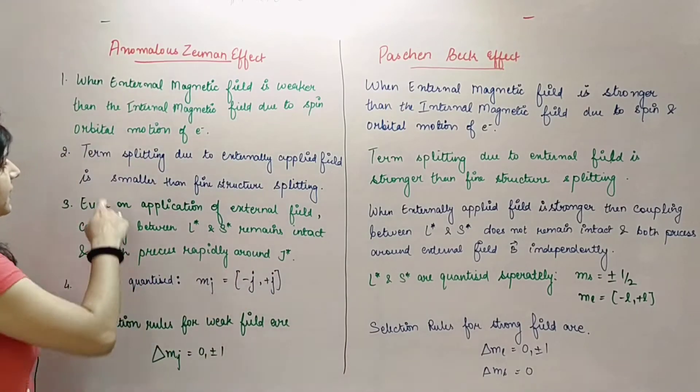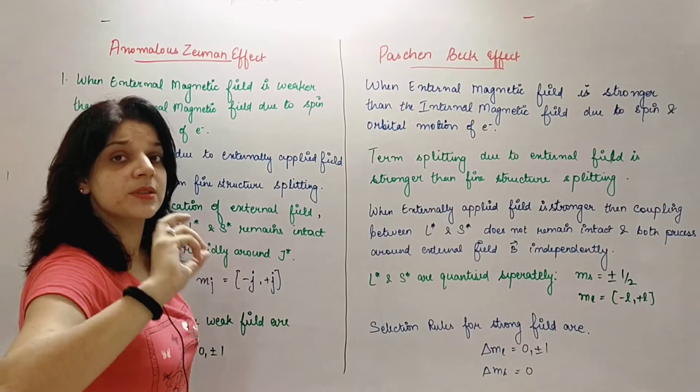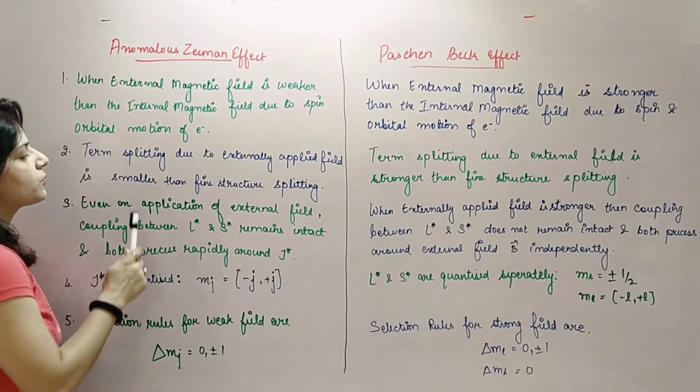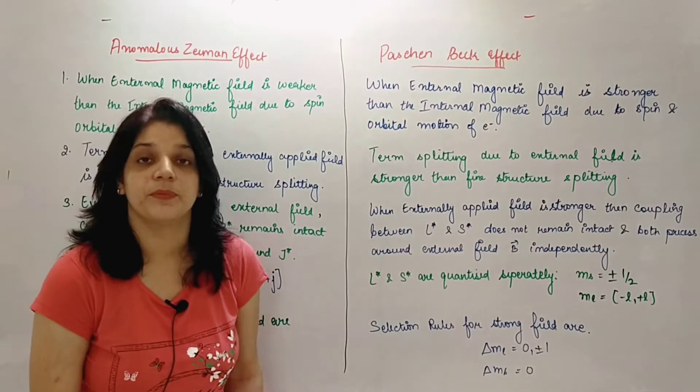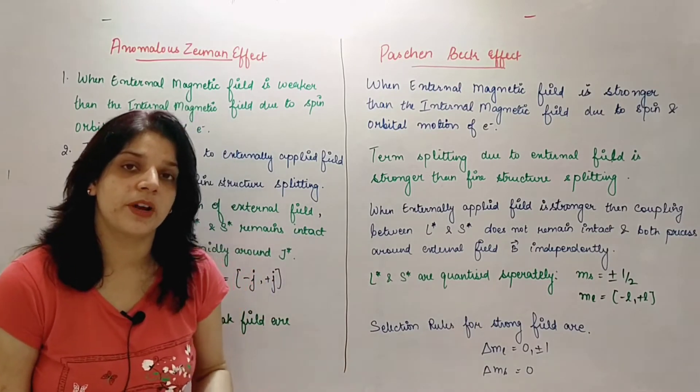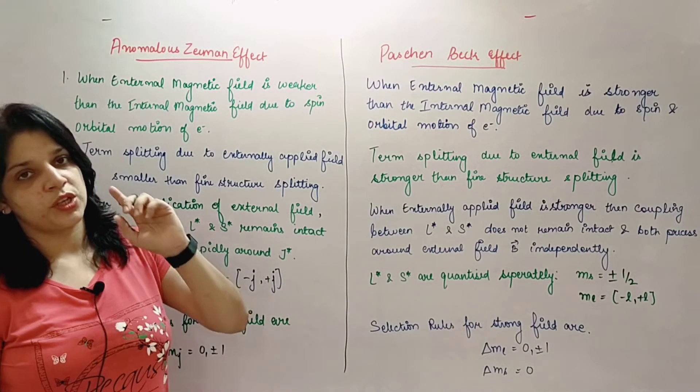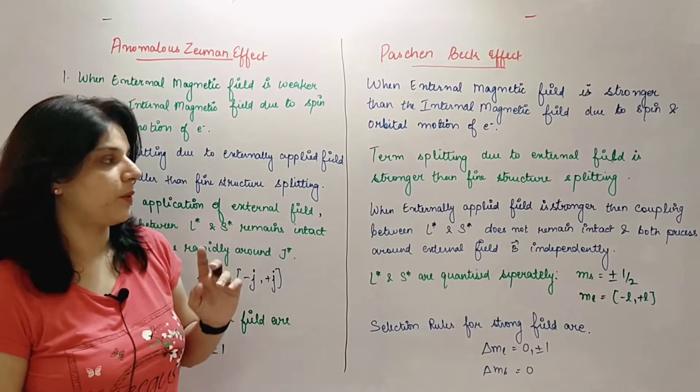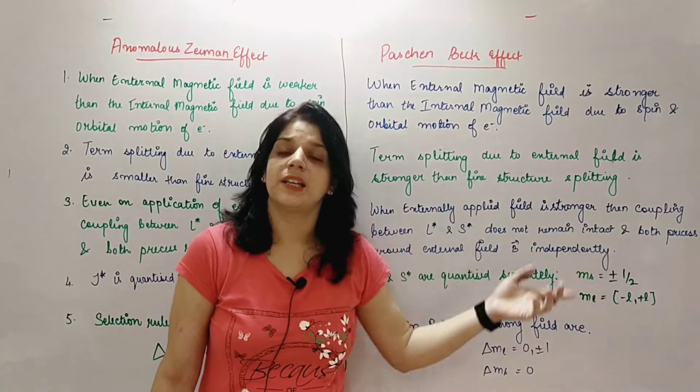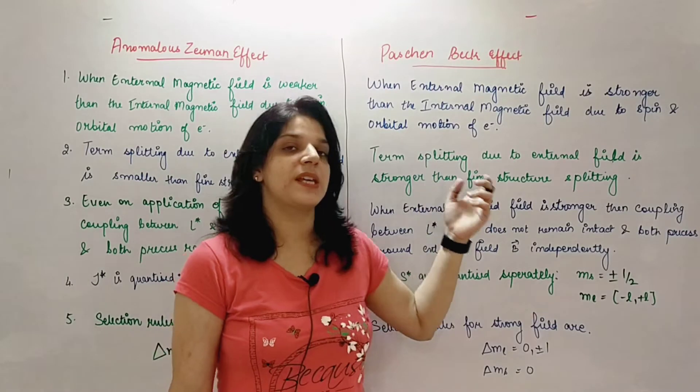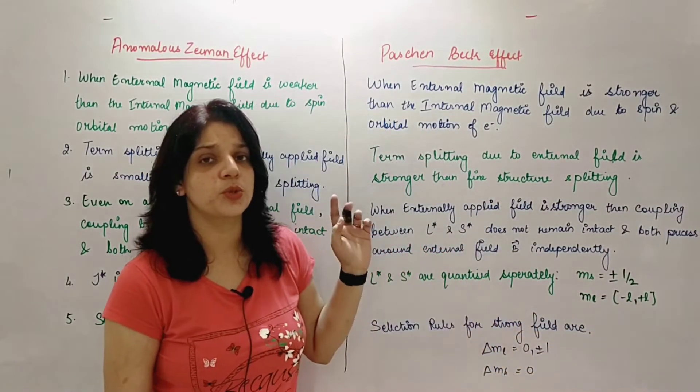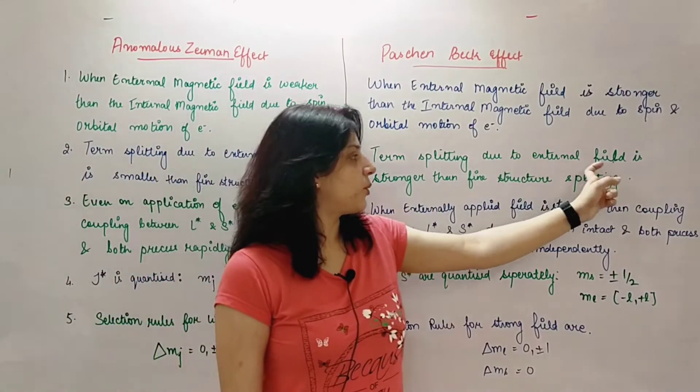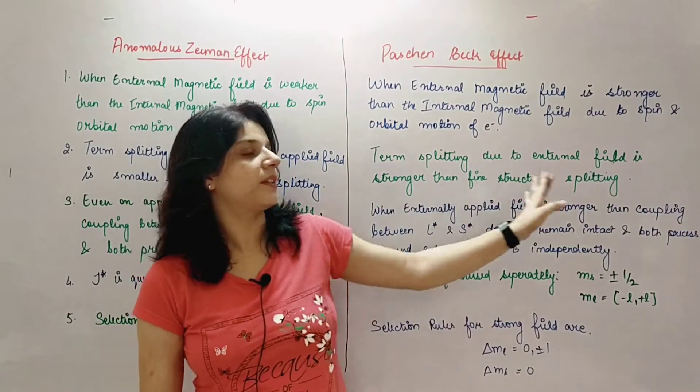Now, what will it be? We'll say term splitting, term splitting in orbitals. Term splitting due to externally applied field is smaller than the fine structure splitting. Means, the magnetic field which I'm externally providing, the splitting due to that will be very less as compared to the sample's own fine structure splitting. Whereas, when my external magnetic field is stronger, then obviously in that case the splitting due to fine structure will be less than the splitting due to external magnetic field. So we'll say, term splitting due to external magnetic field is stronger than the fine structure splitting.